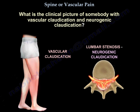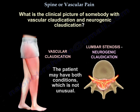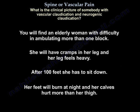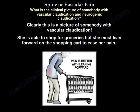Consider the clinical picture of somebody with both vascular claudication and neurogenic claudication — a patient that has both, which is not unusual. An elderly woman with difficulty ambulating more than one block: she has cramps in her leg, her legs feel heavy, and after 100 feet she has to sit down. Her feet burn at night and her calves hurt more than her thighs. This is clearly a picture of vascular claudication. But she can shop for her groceries as long as she leans forward on the shopping cart to ease her pain.